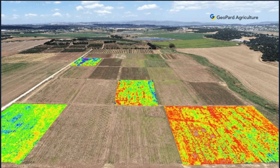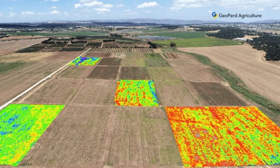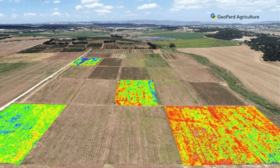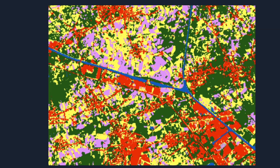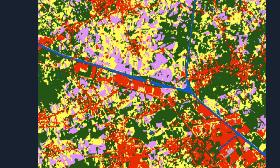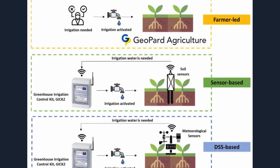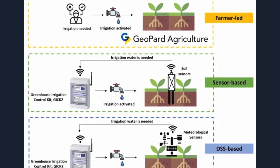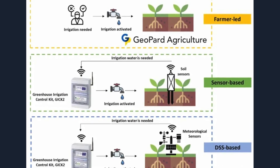Precision agriculture harnesses the power of geographic information systems to provide farmers with intricate insights into their fields, ranging from detailed vegetation and productivity maps to crop-specific information. The heart of this approach lies in data-driven decision making, empowering farmers to optimize their practices for maximum yield and efficiency. Through the generation of productivity maps, crop monitoring platforms use historical information from prior years, enabling farmers to identify productivity patterns and pinpoint fruitful and unproductive locations throughout their farms.